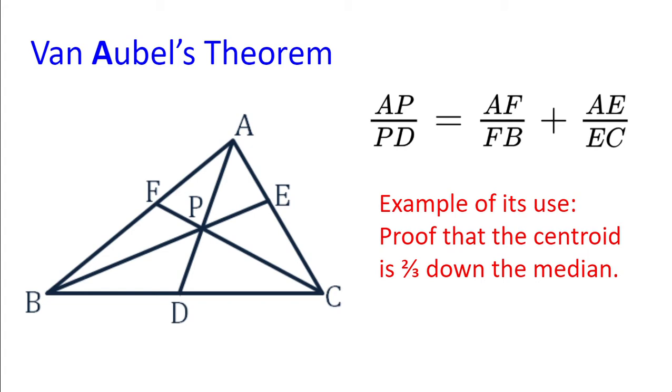With this we can immediately prove that the centroid is two thirds down the median. How? Well, AF divided by FB is one because F bisects AB, and similarly AE divided by EC is also one.